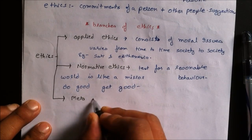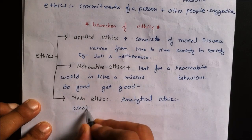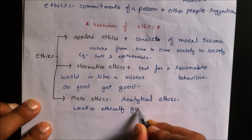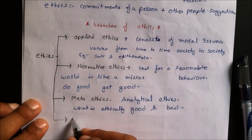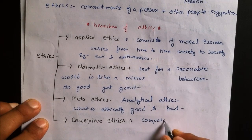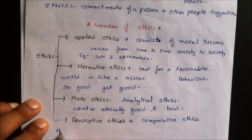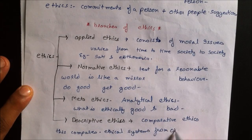The third part is Metaethics, also known as Analytical Ethics. This generally gives us the analysis of what is good and what is bad. The fourth one is Descriptive Ethics, also known as Comparative Ethics. This compares ethical systems from one to another, either from past to present or one society to another.